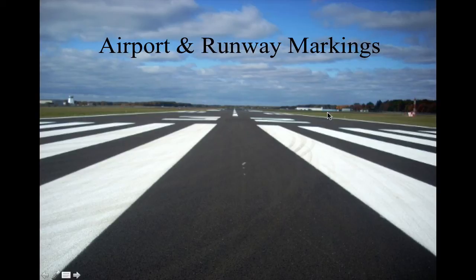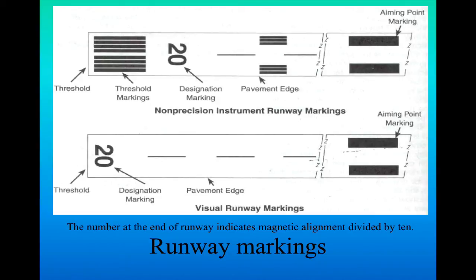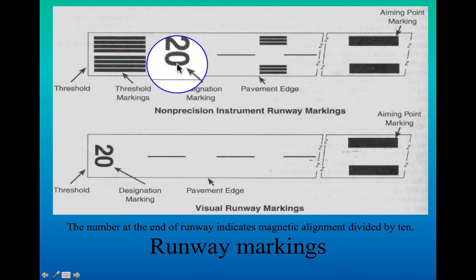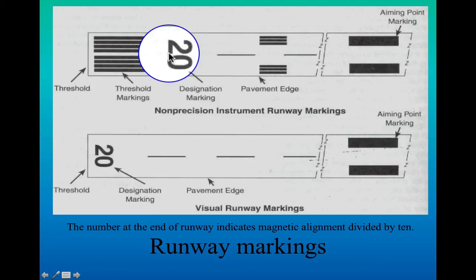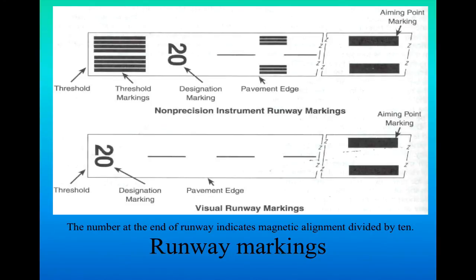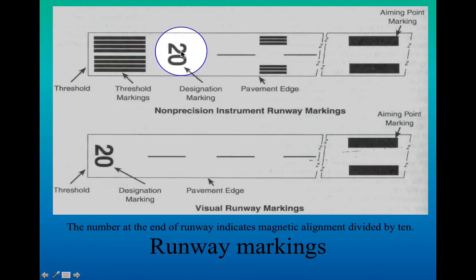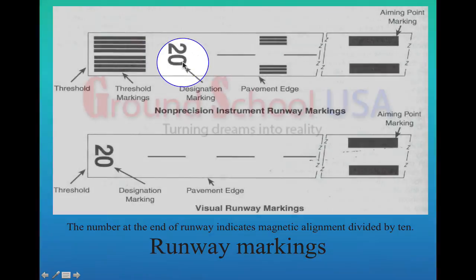Every runway has a number, and that number has significance — it's not random. The number 20 in this case means that when we taxi onto that runway for takeoff, our airplane is pointing in the direction of 200 degrees magnetic. To find the heading, just add a zero to the runway number. So from this end, facing down the runway, we are facing the 200-degree magnetic direction.